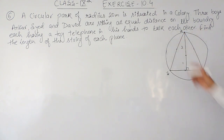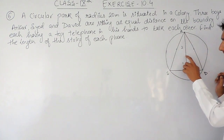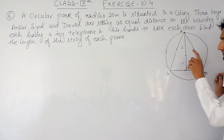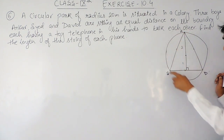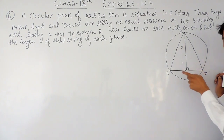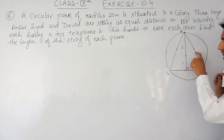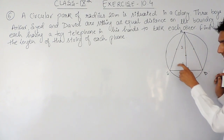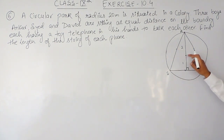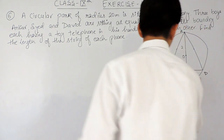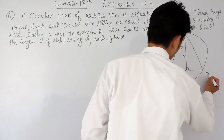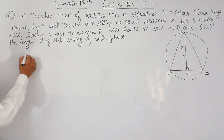This will be the center for this circle, because in an equilateral triangle this point will act as the centroid and also as the circumcenter — meaning from here we can draw a circle touching the vertices. It will also act as the incenter, meaning from here we can draw a circle which touches its sides. So in an equilateral triangle this point acts as all three. This is the center and this is the circumference, so this will be the radius.